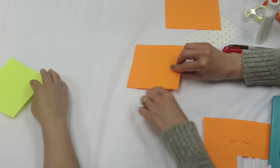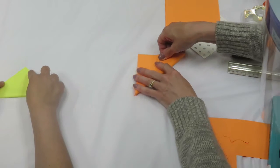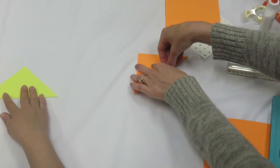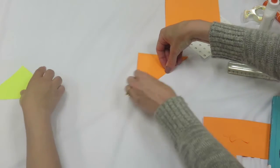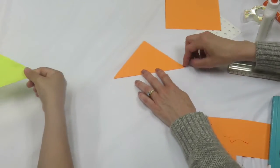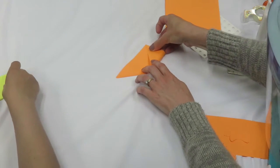So we're going to first take one corner and fold it up to the other corner. And we're going to try to make it as tight as you can make it. Then you're going to take this end, this side, and go up to the middle point.